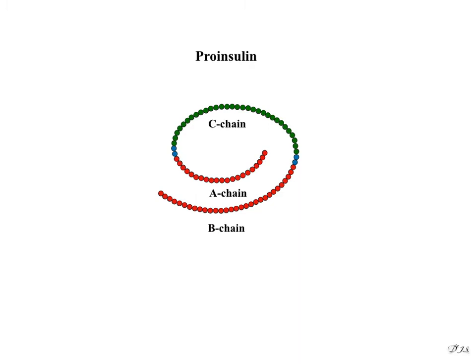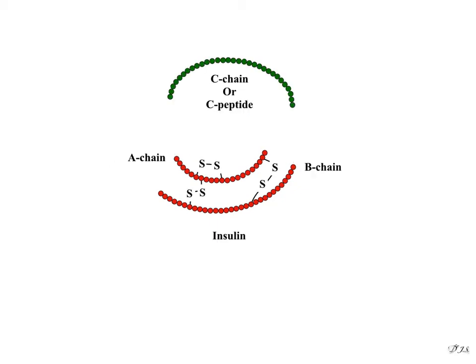Most of the proinsulin is further cleaved in the Golgi apparatus to form insulin, which is composed of 51 amino acids. Insulin is composed of the A and B chains connected by disulfide linkages, and the C chain peptide.